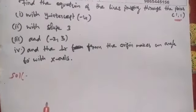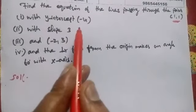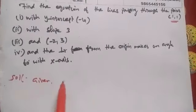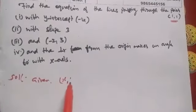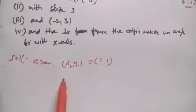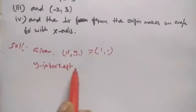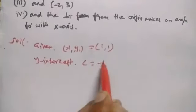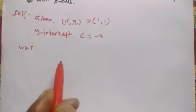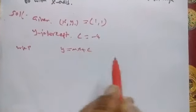So part 1: Given point and y-intercept c, we use slope-intercept form. Given point x1, y1 equal to (1,1) and y-intercept c equal to -4. Note that the equation of the straight line is y equal to mx plus c.